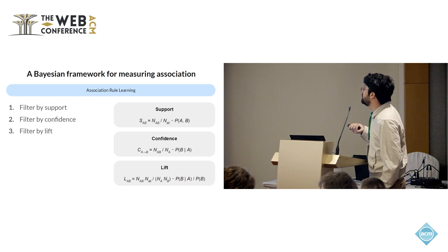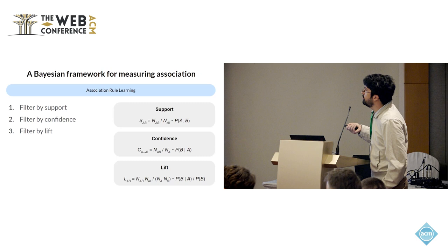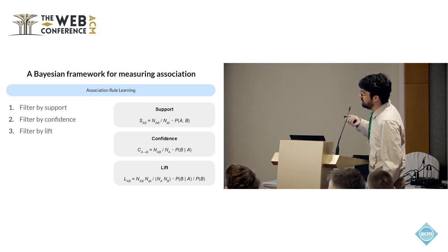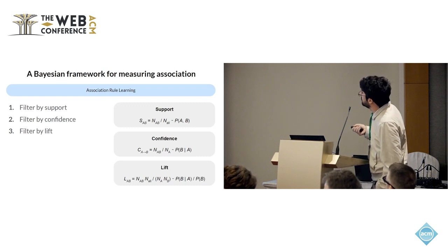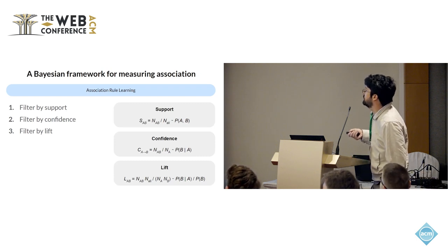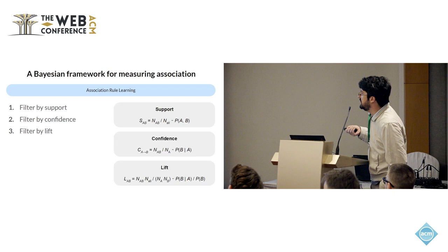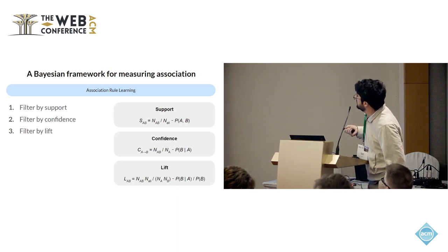For instance, suppose feature A happens for every sample you have. Then unless B appears very rarely, the probability of getting both together is high just because A is always there. Similarly, confidence is basically a point estimate of the probability of getting B given you already found A — so you are just measuring how frequent B is in a subset of your sample. That doesn't tell you anything about association.